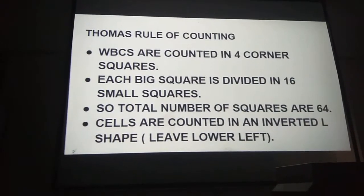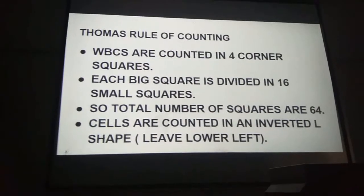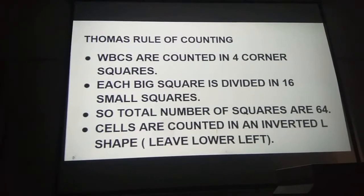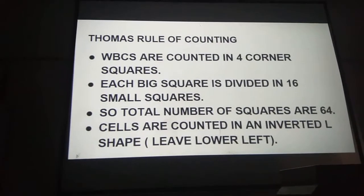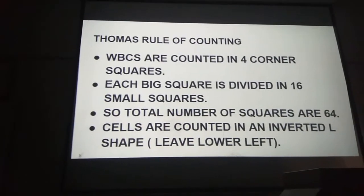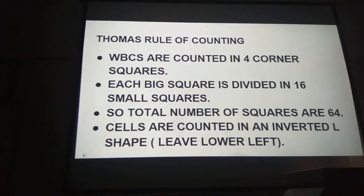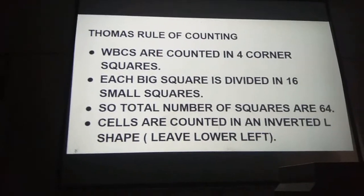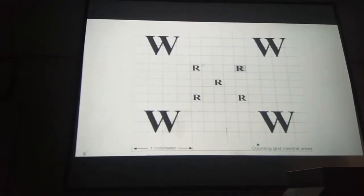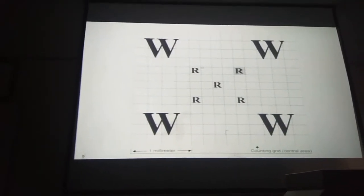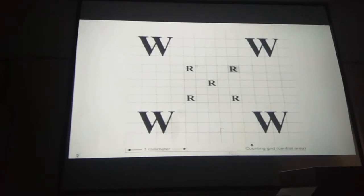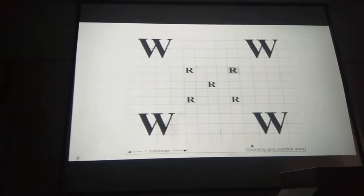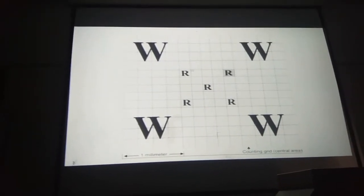The total number of squares is 64, as 4 into 16 is 64. Cells are counted in an inverted L shape, leaving the lower left corner. If you are counting in the chamber, you will leave the lower left of each big corner square. One side of one big square is 1 mm in the Neubauer chamber.